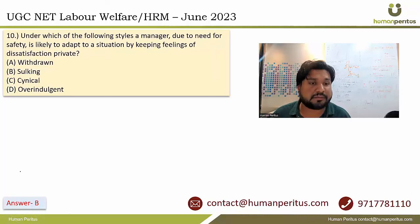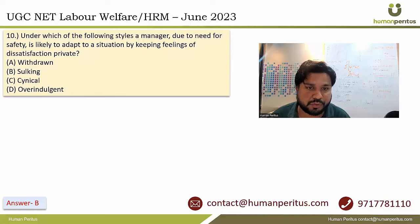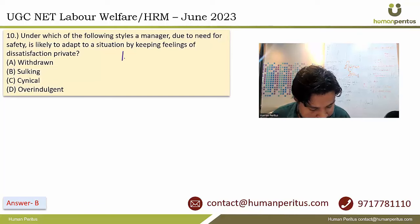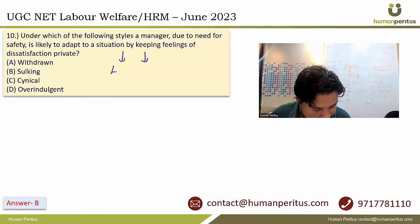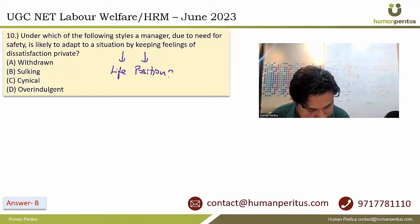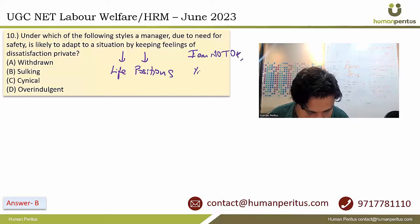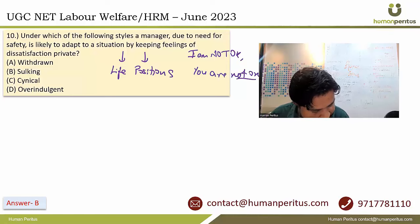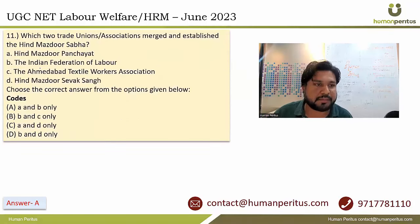Under which style does a manager, due to need for safety, adapt to a situation by keeping feelings of dissatisfaction private? This is actually about life positions — I am not okay and you are also not okay. The correct answer is Sulking, option B.